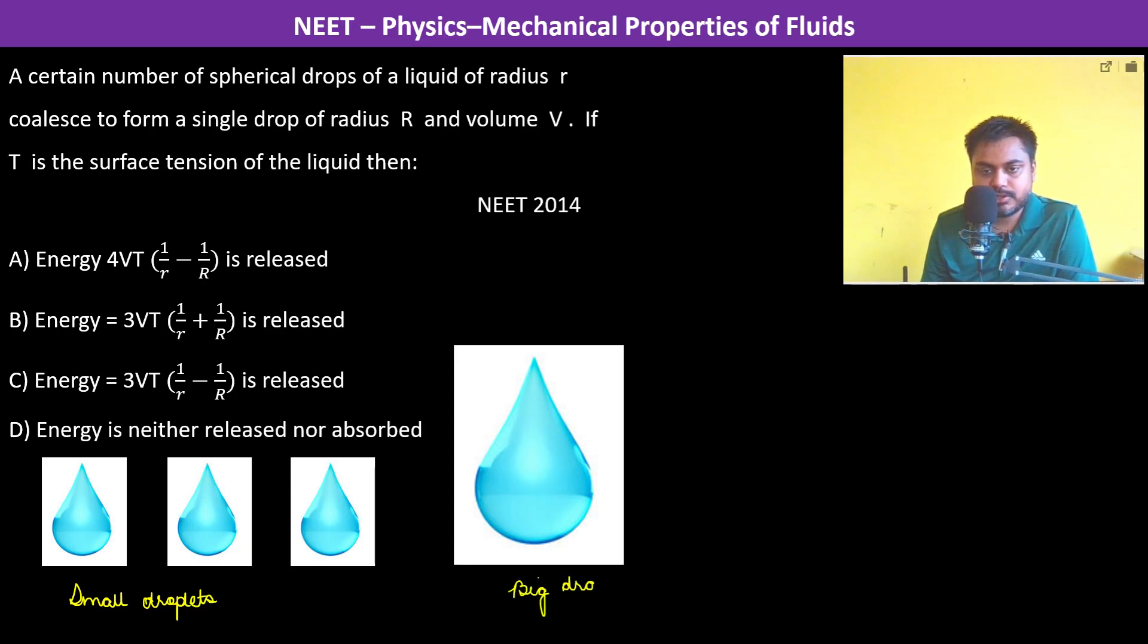In this, if you see, the volume of water should remain the same, whatever liquid is there. So each one has a volume of 4 by 3 pi small r cube and this has a volume of V which is 4 by 3 pi R cube.